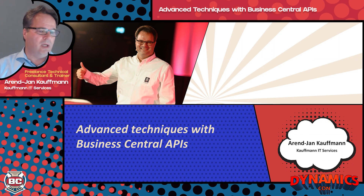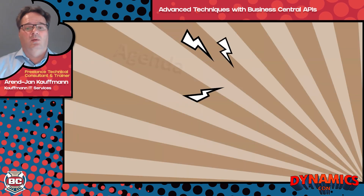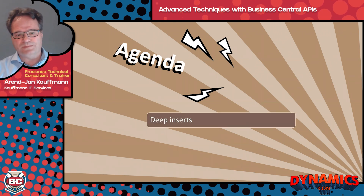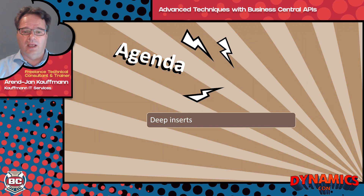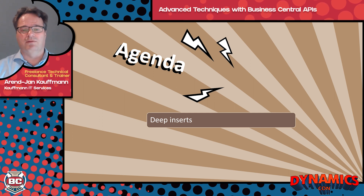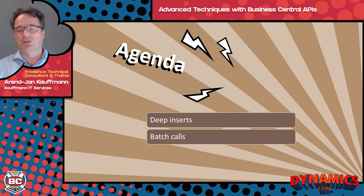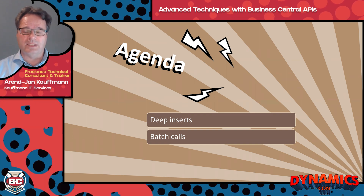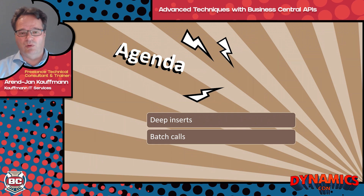So that is what we are going to talk about, and I have a small agenda for you, but there will be a lot of content. We will start with talking about deep inserts — that's about creating headers and lines together with APIs, which will make your API calls a little bit easier and faster. We'll talk about batch calls, which will be even better for performance, because batch calls allow you to combine multiple calls in one request rather than doing multiple requests and multiple round trips to the server.